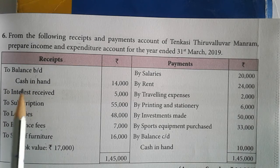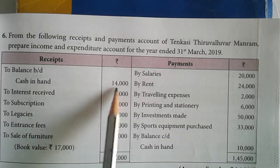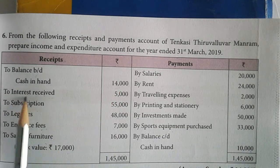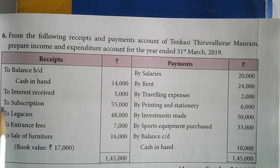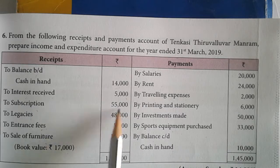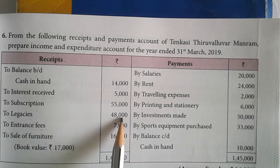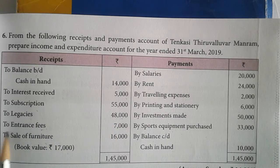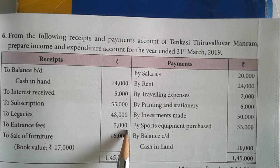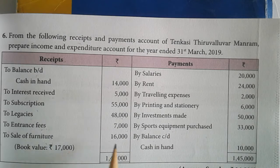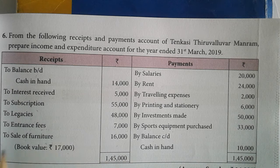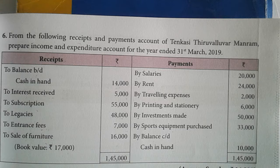Balance brought down: cash in hand 14,000. To interest received 5,000. To subscription 55,000. To legacies 48,000. To entrance fees 7,000. To sale of furniture 16,000 — book value 17,000.